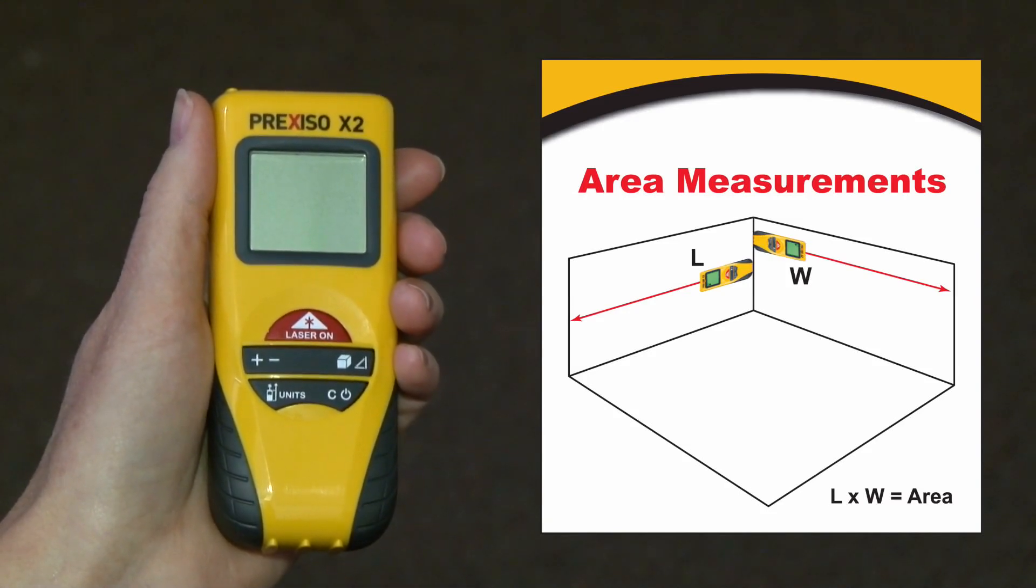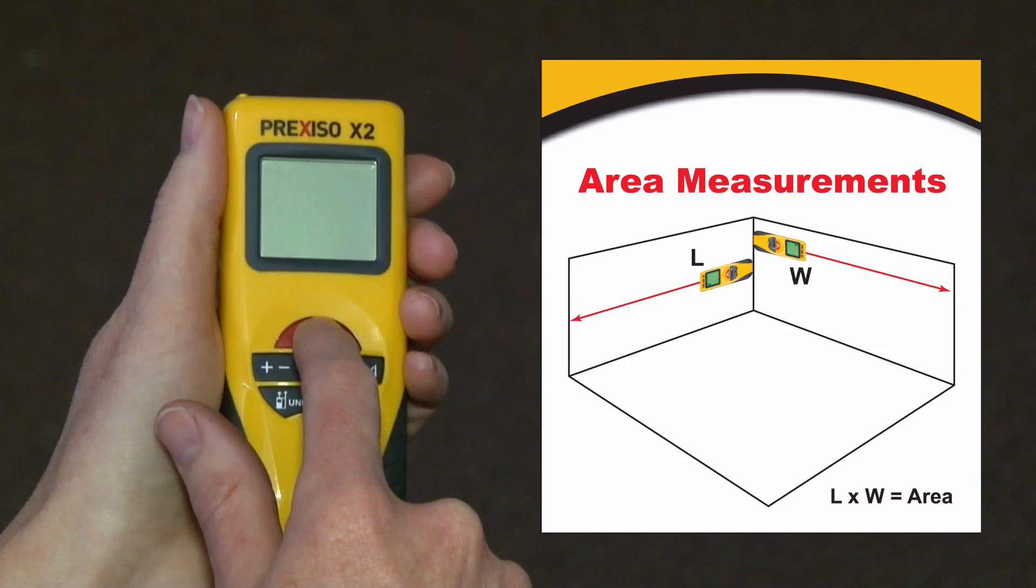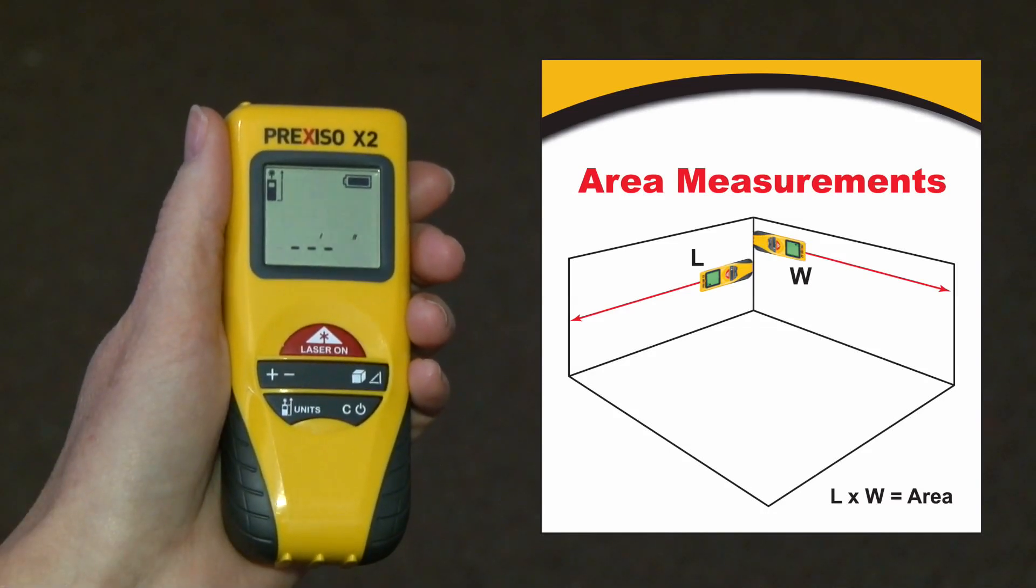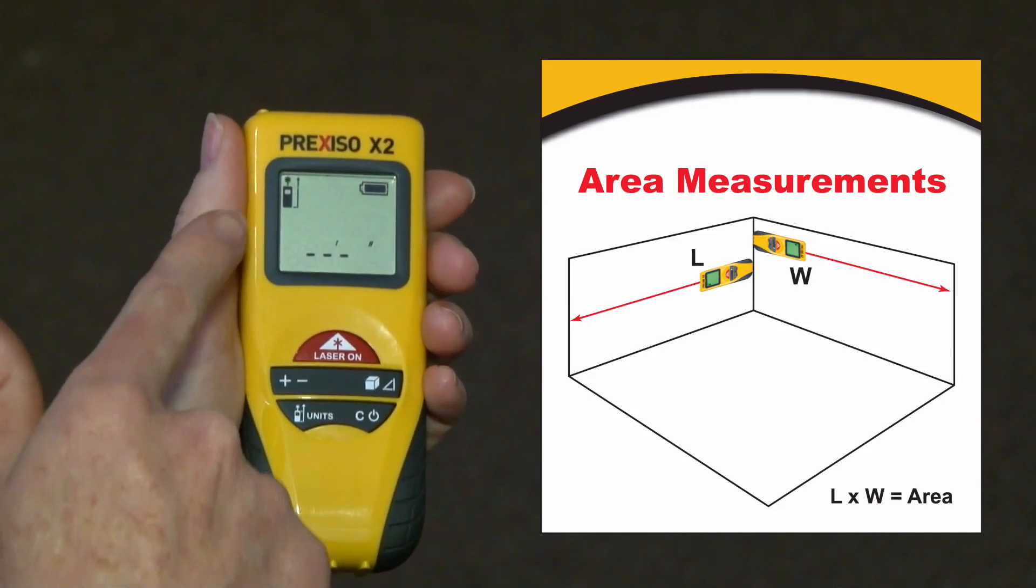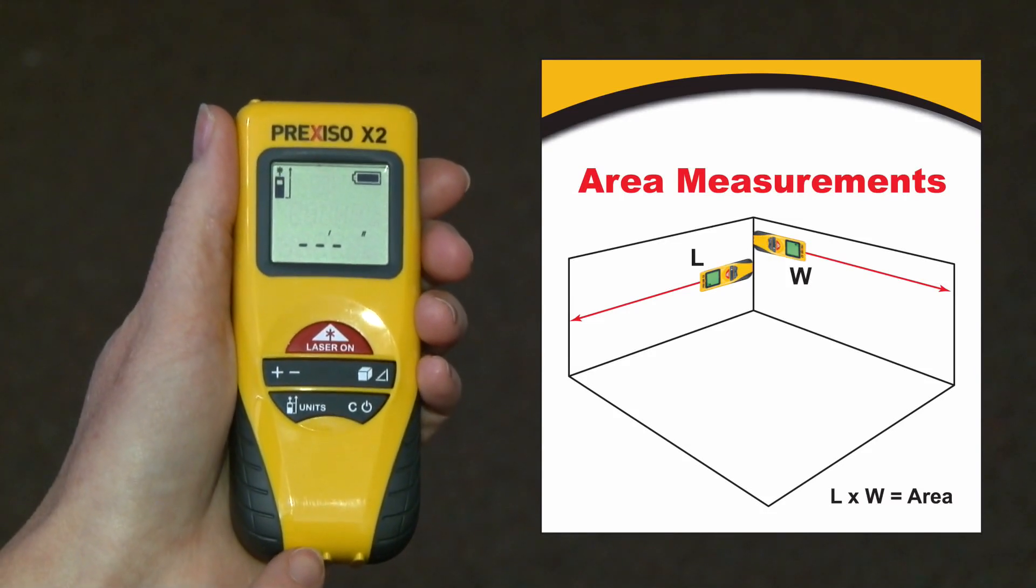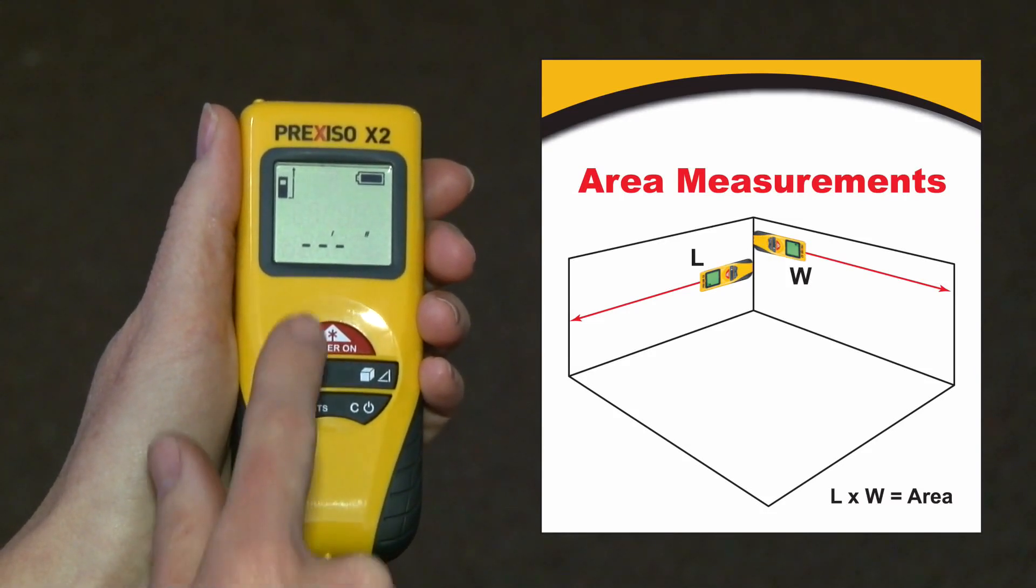First, we turn the unit on by pressing the large red laser on button and release. Then we check the front and back button to make sure we're measuring from the back of the unit. I'll make sure it's measuring in feet and inches.